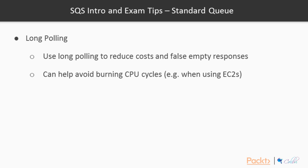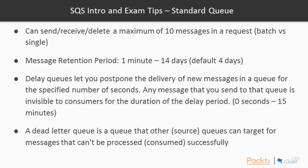Long polling can help avoid burning CPU cycles, for example when using EC2 instances to process messages. SQS can send, receive, or delete a maximum of 10 messages per request. With a single request you can only send or delete one message, while batch requests allow sending, receiving, or deleting up to 10 messages at a time.